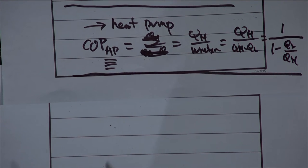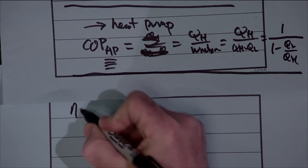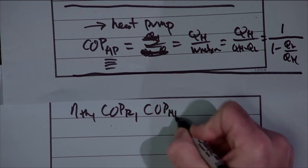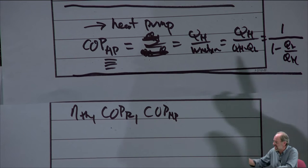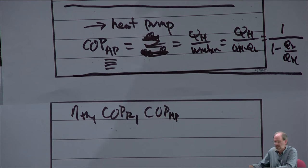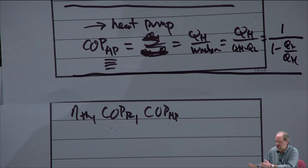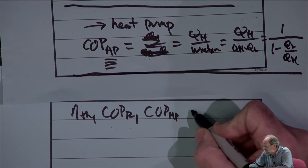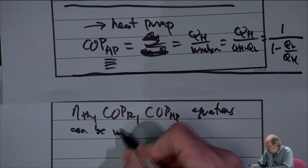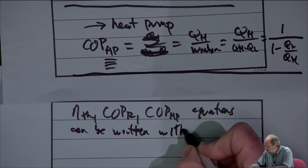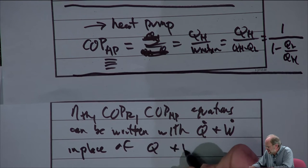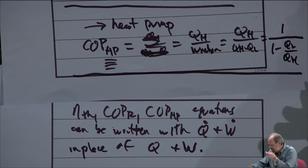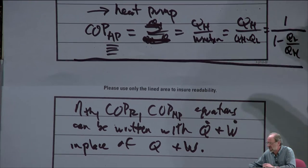One note: the thermal efficiency and coefficient of performance equations can all be written in rate form. If we take a time derivative of any of those equations, the Q terms become Q-dot and the W terms become W-dot. There's no difference except they're expressed as rates of heat transfer or work production rather than total amounts. Look at each problem carefully to know whether it's asking for a rate equation or a total amount.